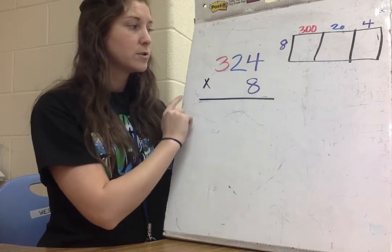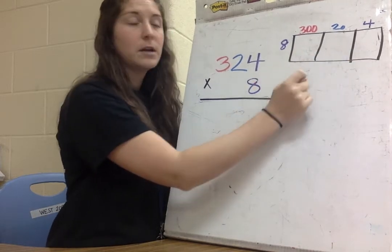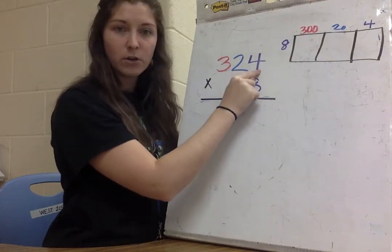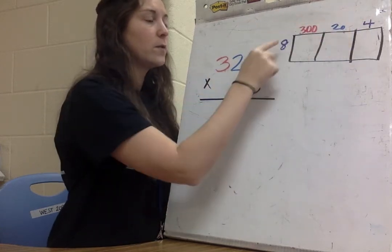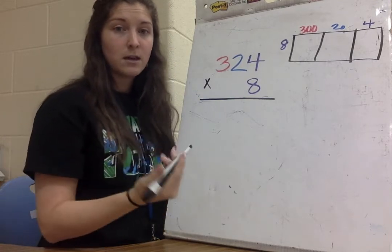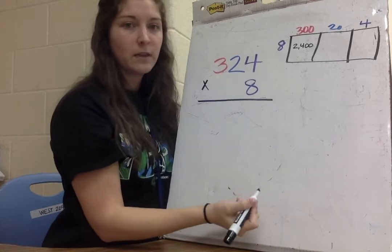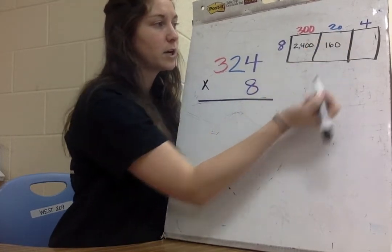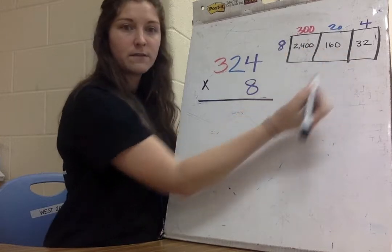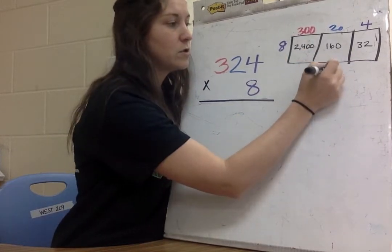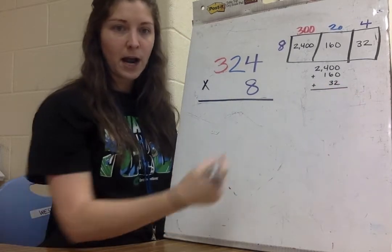As a review, if I were to multiply 324 times 8 using the box method, I would break my box up into three different boxes. Notice the way I have them color-coded by place value: 3 is worth 300, 2 is worth 20, and 4 is worth 4. So using the box method, I would do 8 times 300, which is 2400, then 8 times 20 which is 160, and 8 times 4 which is 32. Then I take all three values and add them up: 2400 plus 160 plus 32.